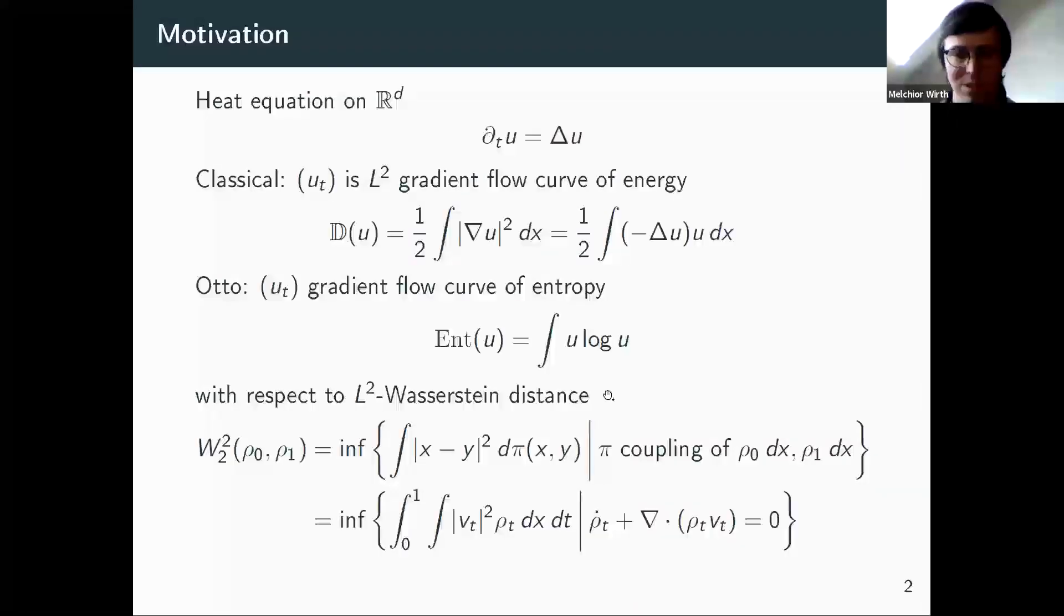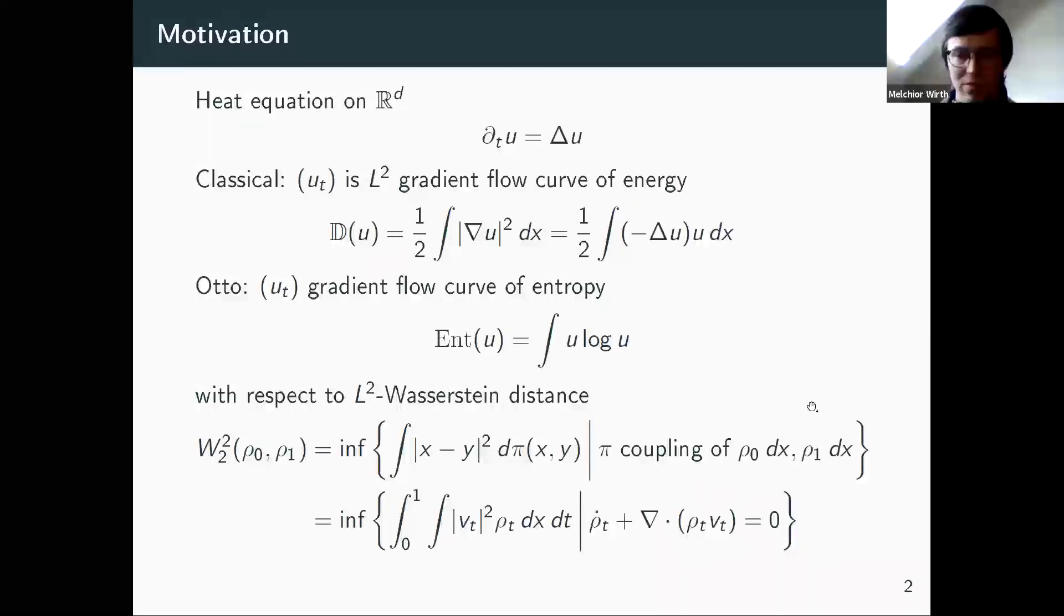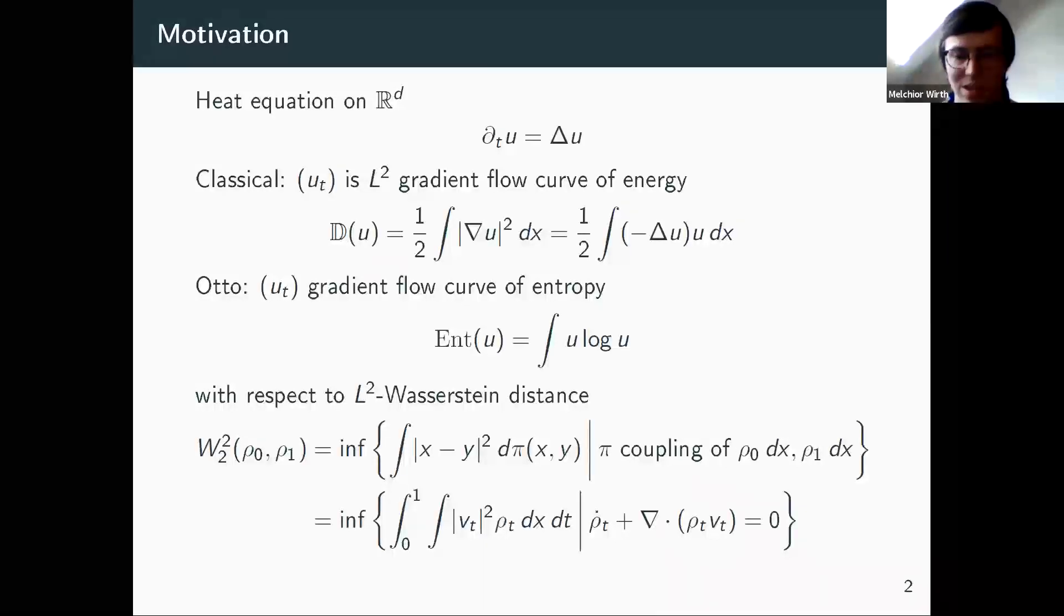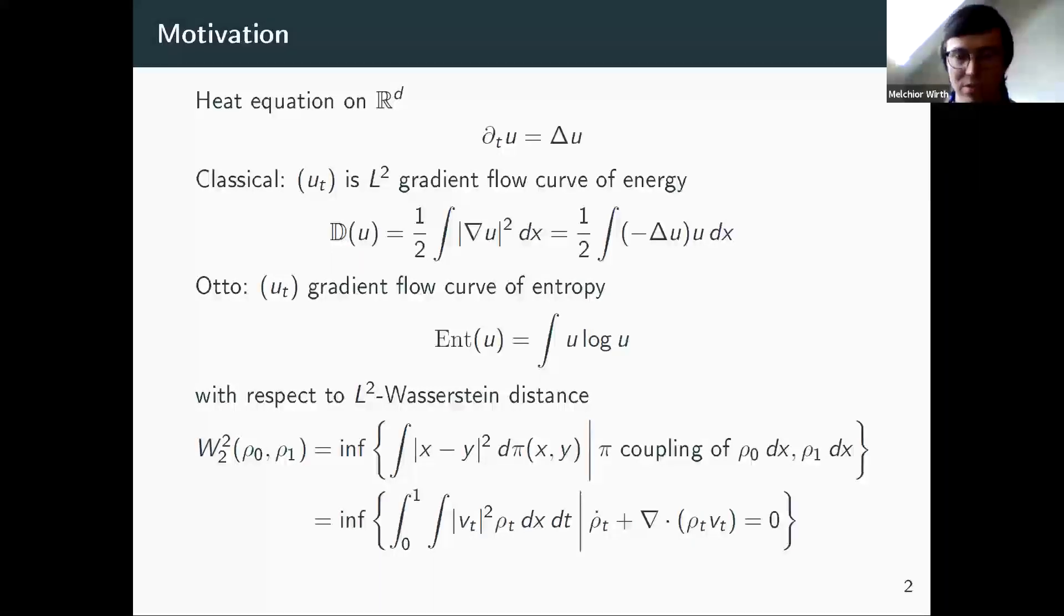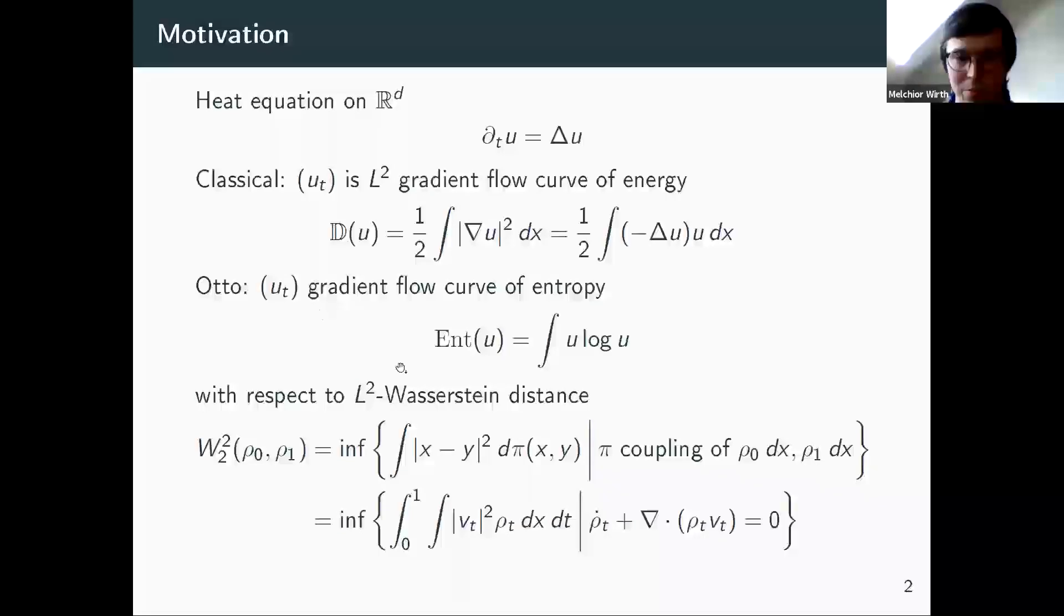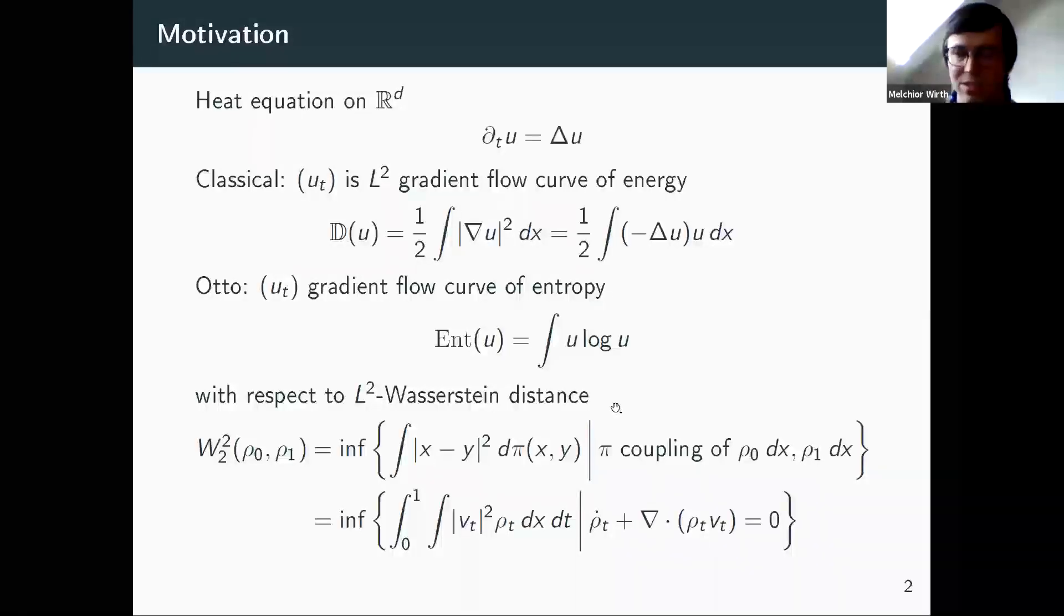And in which sense is it the gradient flow of the entropy? Well, that is with respect to the so-called L^2 Wasserstein distance from optimal transport, which I wrote down here. The first formula is probably more well-known. This is this earth-moving formulation. But later on, this fluid mechanics formulation in the second equality is actually more useful.